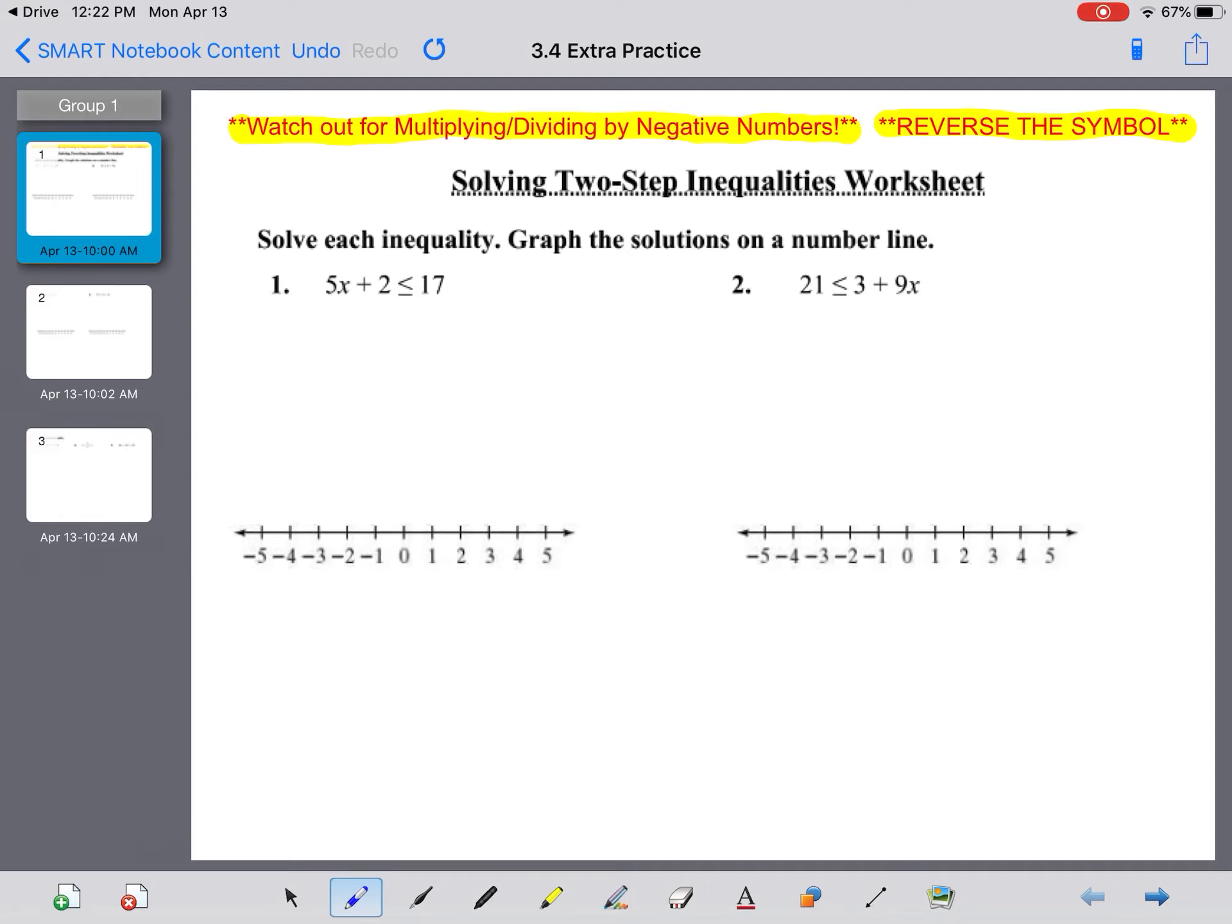Number one says 5x + 2 is less than or equal to 17. I'm going to subtract 2 on both sides. 5x is less than or equal to 15, and we divide by 5 on both sides. x is less than or equal to—fives cancel—15 divided by 5 is 3. Put a closed dot on 3; arrow goes to the left.